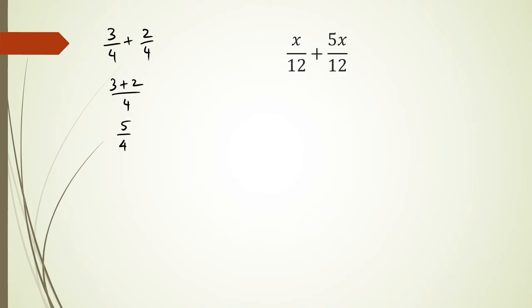And then 3 plus 2 is 5 over 4. Likewise here, I've got x plus 5 over 12 plus 5x over 12.